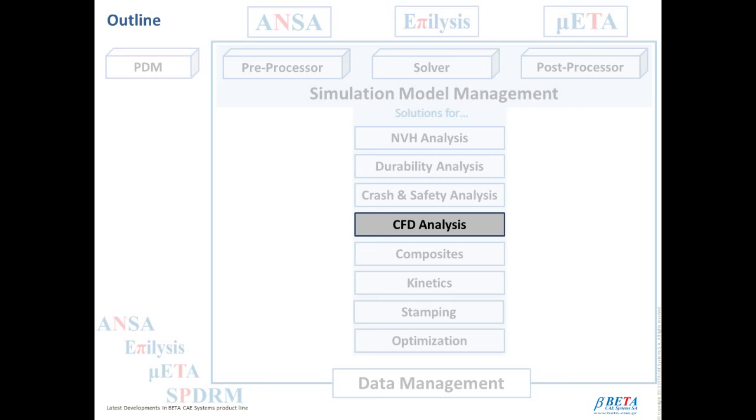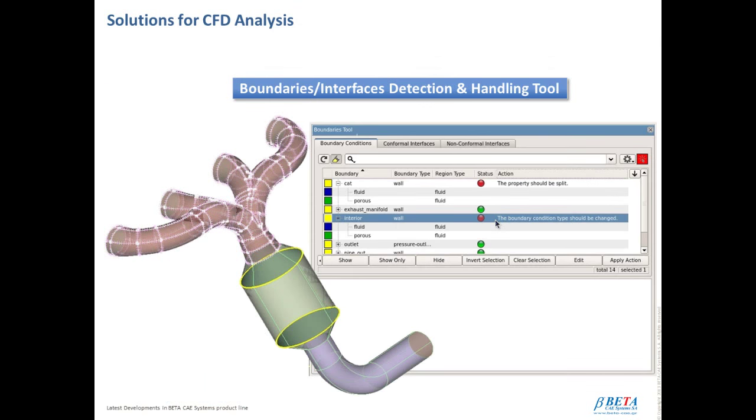All CFD needs are covered in a single environment through META software, offering high efficiency solutions for CFD applications in various sectors, as well as capabilities to easily handle and explore extremely large and complex models. So let's see what we are up to lately. First of all, we have the Boundaries Interface and Detection and Handling tool introduced with version 16. It checks the accuracy and validity of the CFD model in terms of the boundaries and interfaces accuracy and validity. After checking the boundary condition type, unconnected regions, or if a property needs to be split, as a next step, it proceeds with suggesting solutions to overcome the detected problems, even with the creation of conformal and non-conformal interfaces.